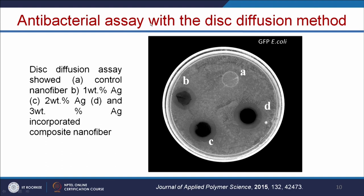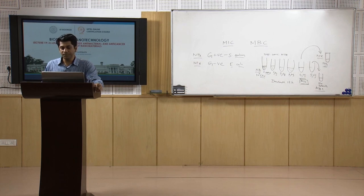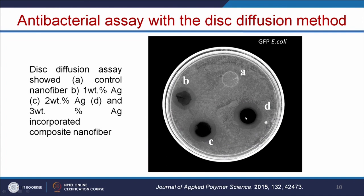The next method is antibacterial assay with the disc diffusion method. In the bacterial plate, you will be adding lawned bacteria by spread plate method. Once you have a lawn of bacteria, you add a uniform size nanofiber disc, or if you have a nanoparticle solution, you make a sterile Whatman paper of uniform size, dip it into the nanoparticle solution, and place it on top of the bacterial plate. After overnight incubation, you can see a clear zone of inhibition. By measuring the length of the zone of inhibition, we can calculate the antibacterial efficiency of your nanomaterial.